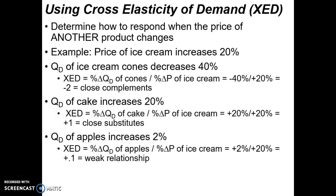And because the value is greater than one — in fact quite far from zero — it's a strong relationship. So based on the data here, ice cream and ice cream cones are close complements.